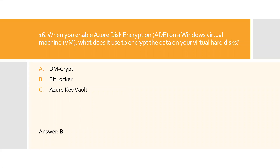Question sixteen: When you enable Azure disk encryption on a Windows virtual machine, what does it use to encrypt the data on your virtual hard disk? A) dm-crypt, B) BitLocker, C) Azure Key Vault. Option B is the right answer. Windows virtual machines are encrypted using BitLocker.